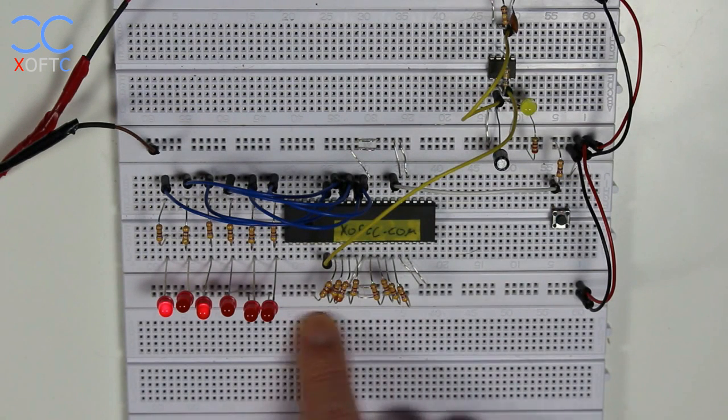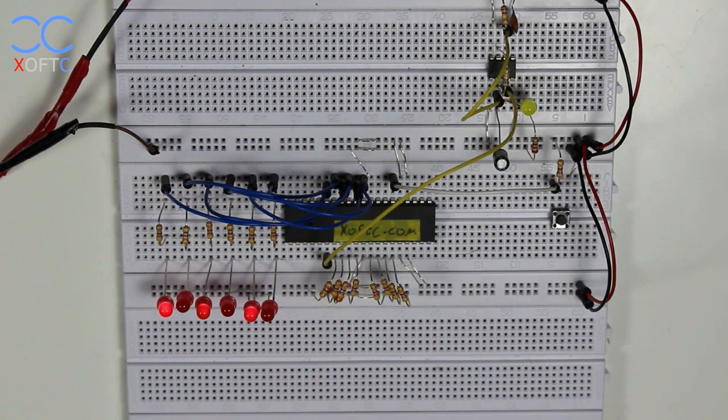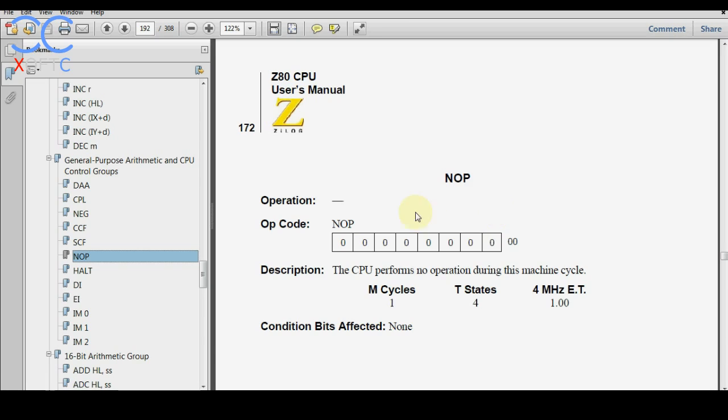Just going back to this command that we're setting here, let's look at the computer and the data sheet, how it looks like. So here we are looking at the data sheet of the Z80 CPU, the user manual, and it has everything that you need to know about how to operate this chip.